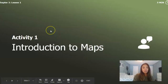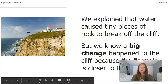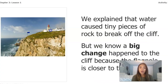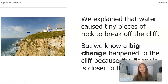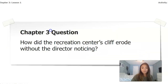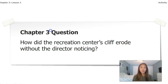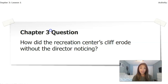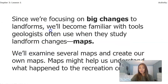We explained that water caused tiny pieces of rock to break off of the cliff, but we know a big change happened to the cliff because the flagpole is now closer to the edge. Our chapter three question that we're going to be focusing on is: how did the recreation center's cliff erode without the director noticing? Remember, erode means tiny pieces of rock breaking off — it's a smaller change, not giant pieces.